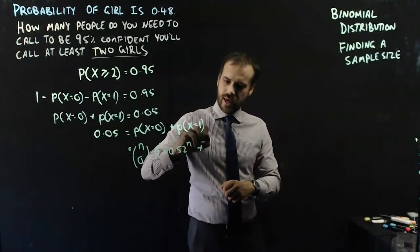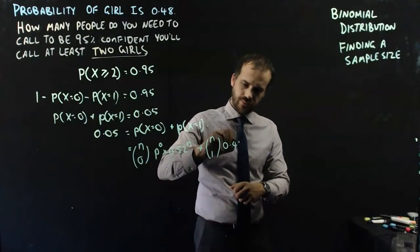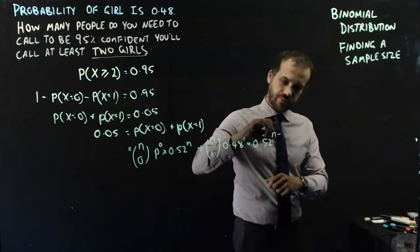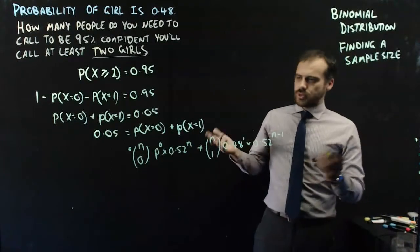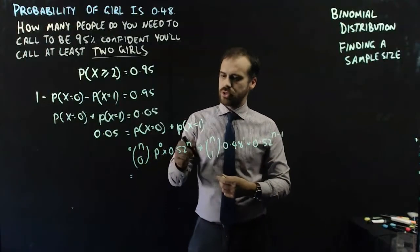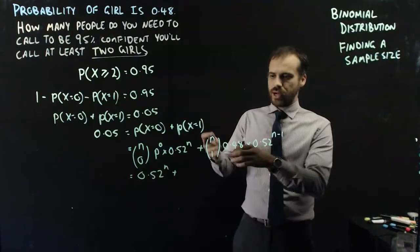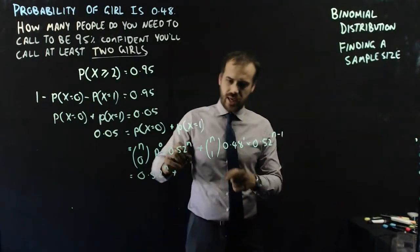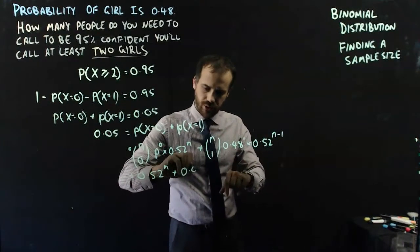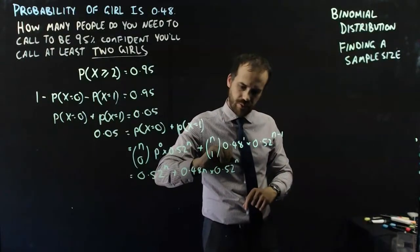Plus nC1 times 0.48 to the power of 1, times 0.52 to the power of n minus 1. We can simplify: nC0 is 1, and 0.48 to the 0 is 1, so the first term is 0.52 to the power of n. And nC1 is just n, and 0.48 to the 1 is 0.48, so the second term is 0.48n times 0.52 to the power of n minus 1.